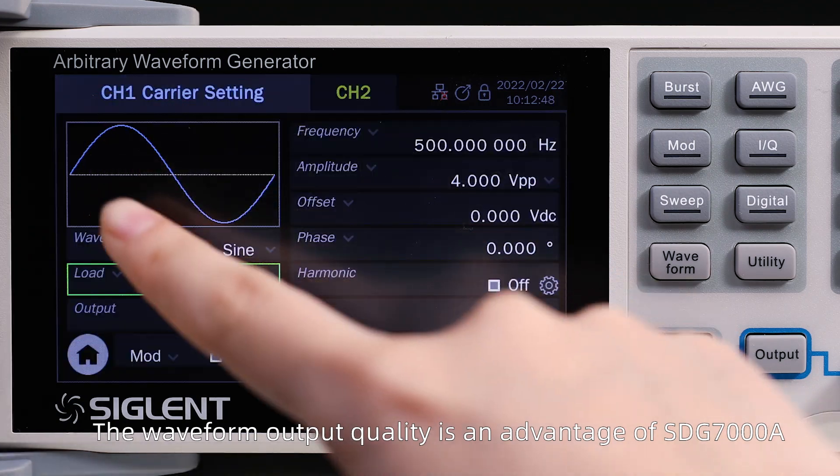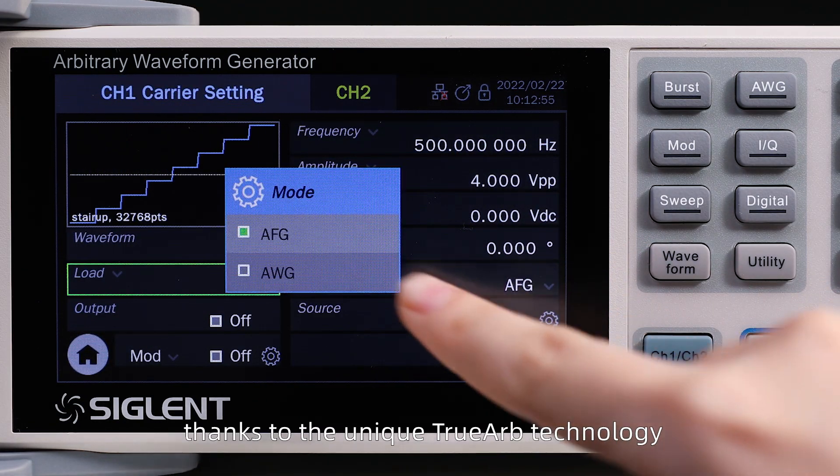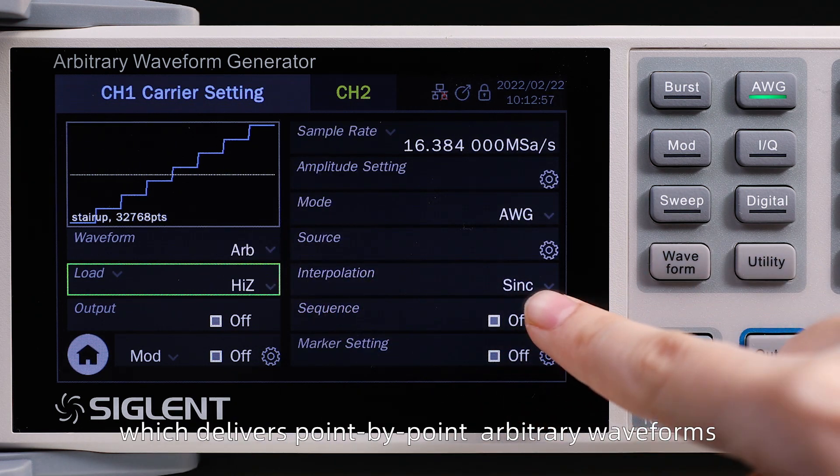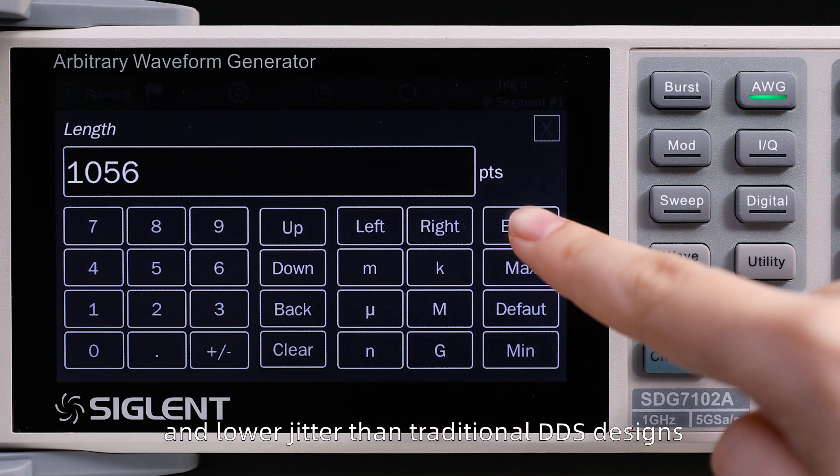The waveform output quality is an advantage of the SDG-7000A thanks to the unique TrueARB technology, which delivers point-by-point arbitrary waveforms and lower jitter than traditional DDS designs.